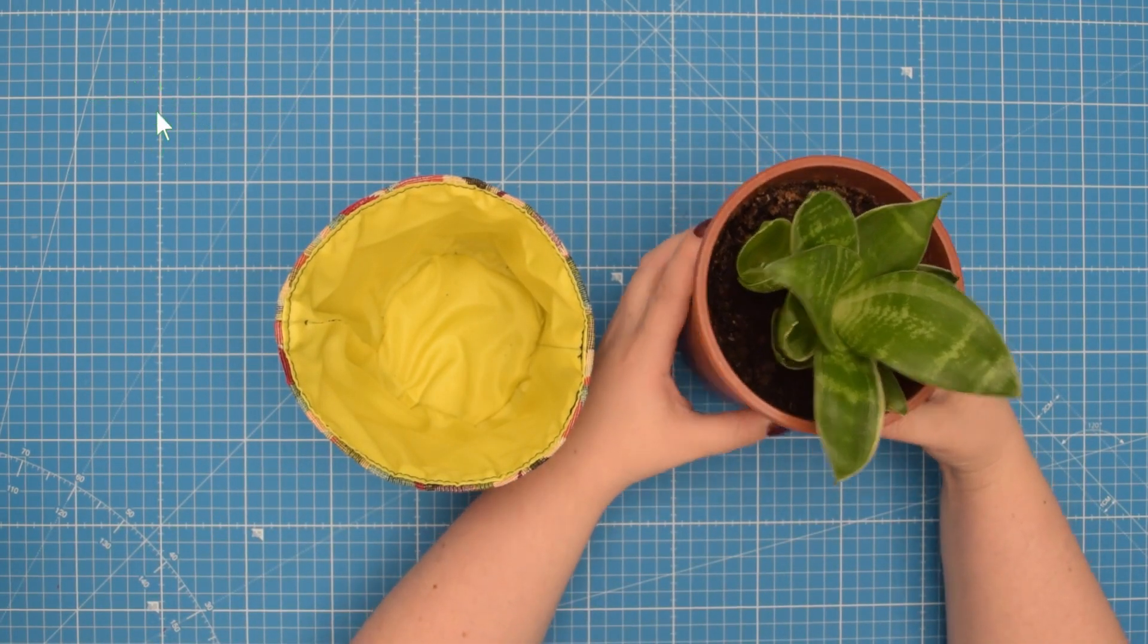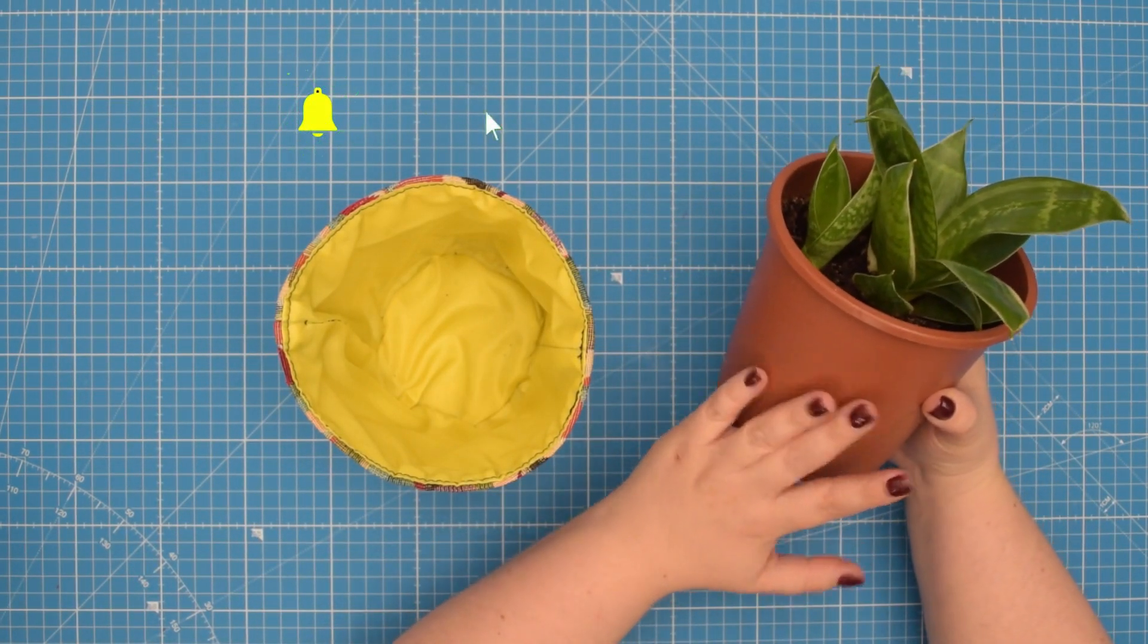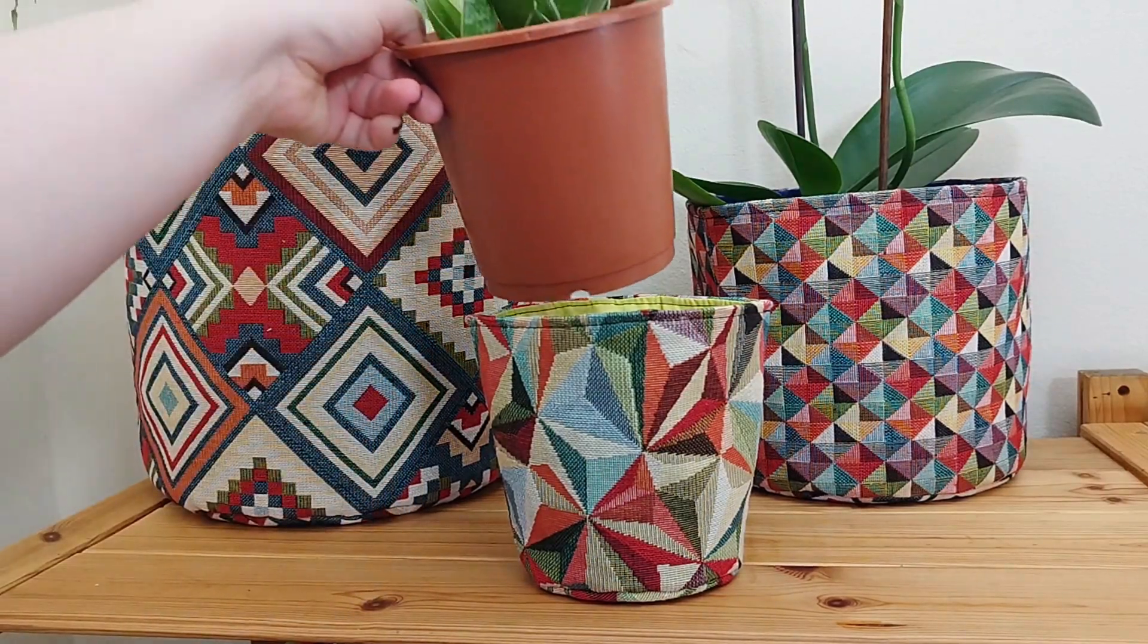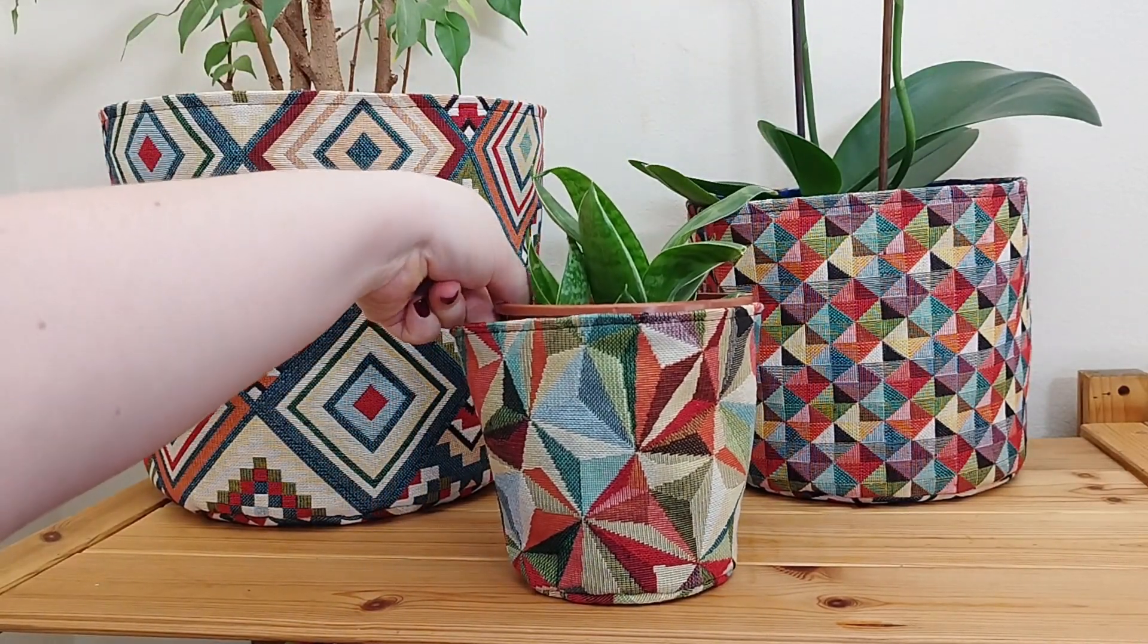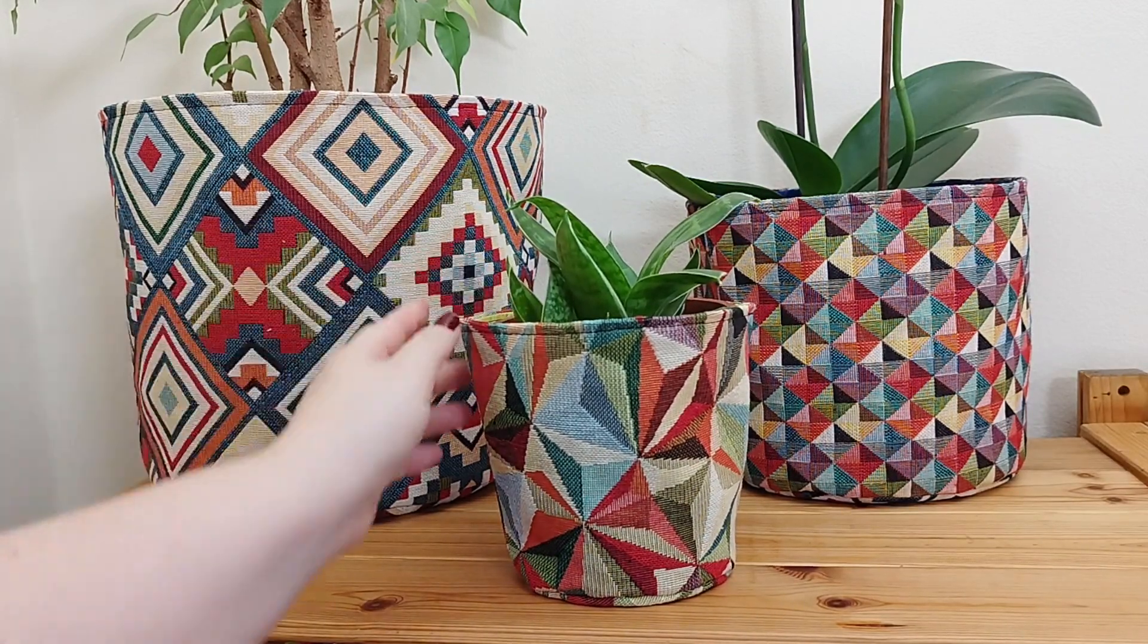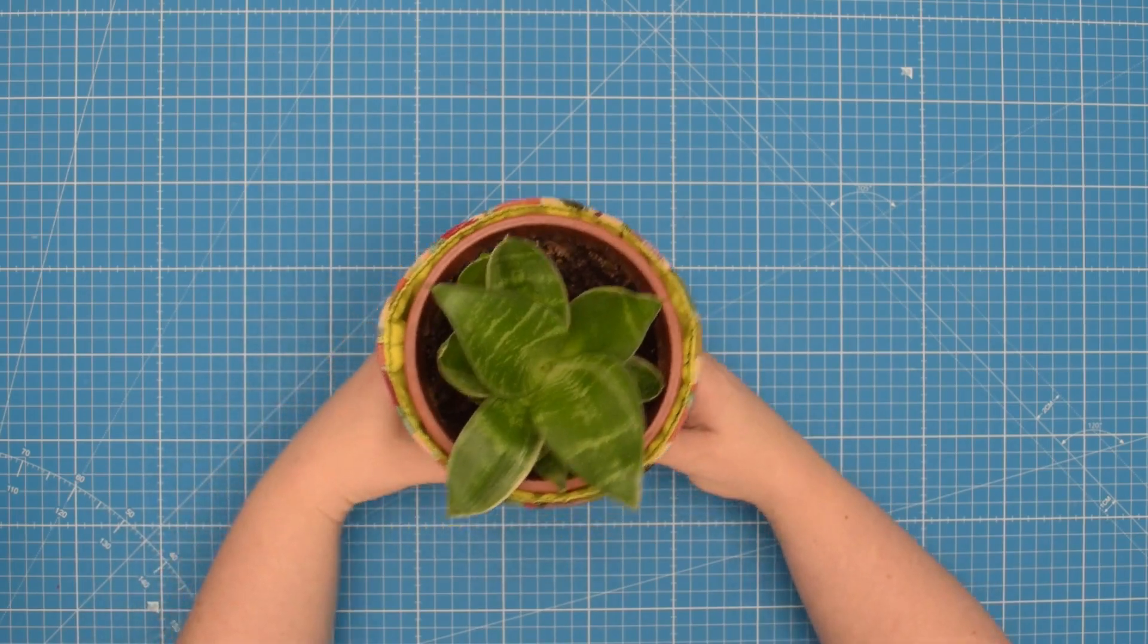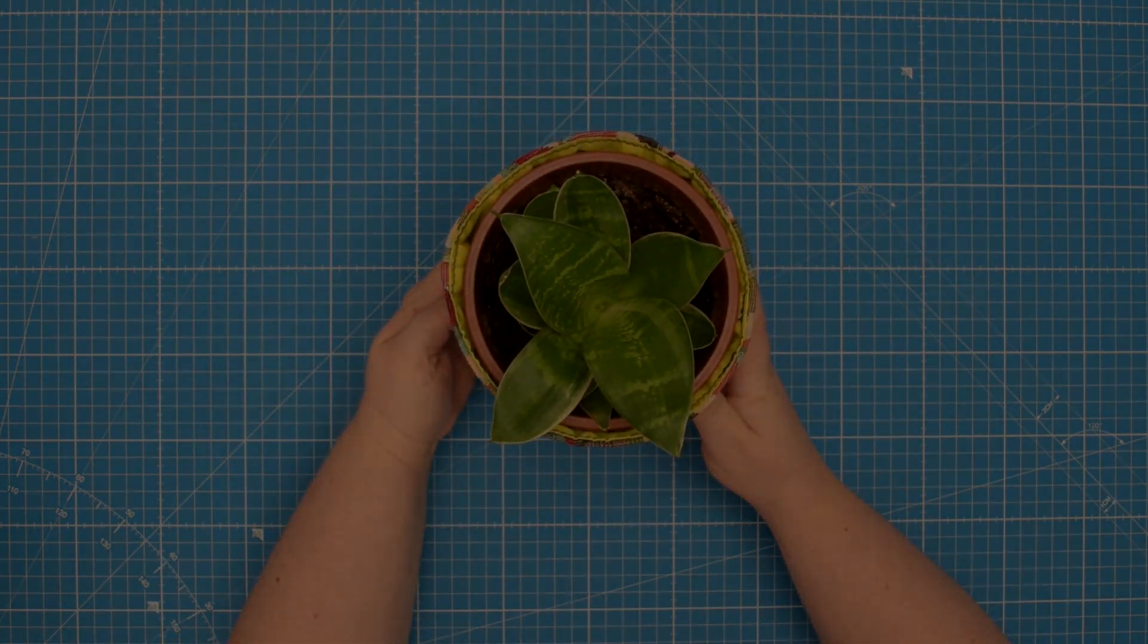So if you have a flower with an ugly pot like this one, you can create a custom size cover to make your house look pretty again. If this is something you would like to learn, then keep on watching.